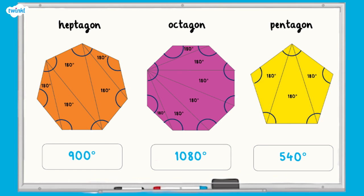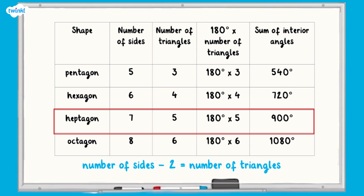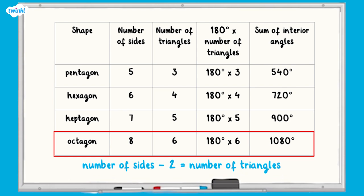A heptagon has seven sides. The total internal angles are 900 degrees. An octagon has eight sides. The total internal angles are 1080 degrees. A pentagon has five sides. The total internal angles are 540 degrees. The pattern we spotted earlier has continued. Remember, the number of triangles the polygon can be split into is two fewer than the number of sides. The heptagon has seven sides, so it can be split into five triangles. The octagon has eight sides, so it can be split into six triangles.